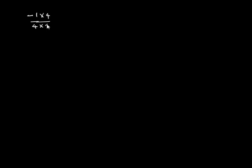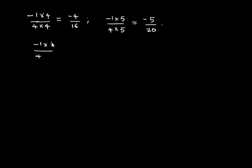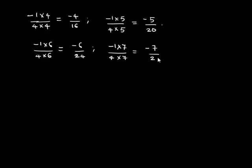So in this problem, we have to find the next 4 terms of the pattern. To obtain the 4th term, negative 1 upon 4 should be multiplied by 4 in the numerator as well as in the denominator, so we get negative 4 upon 16. To obtain the 5th term, negative 1 upon 4 has to be multiplied by 5, giving negative 5 upon 20. For the 6th term, multiplying by 6 gives negative 6 upon 24. And the 7th term, multiplying by 7, gives negative 7 upon 28.